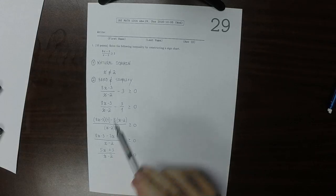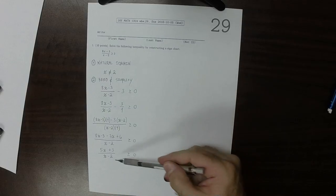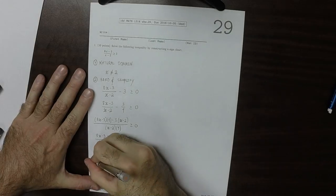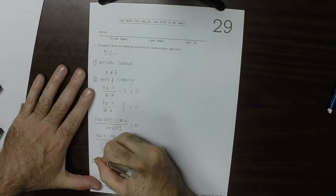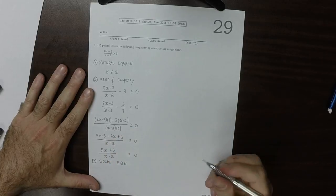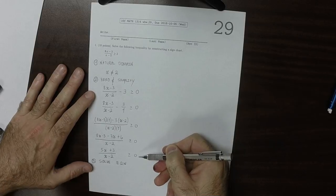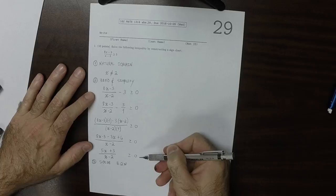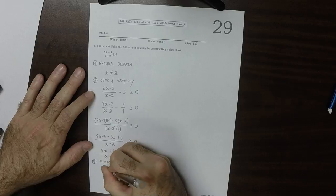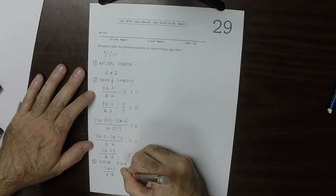So then step 2 is complete because we took the original inequality, we got one of the sides to be 0, and we simplified it as much as possible. So step 3 is we're going to solve an equation. So what we're going to do is we're going to take this zeroed and simplified inequality and we're going to change it to an equality and solve.